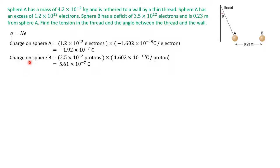Moving on to sphere B: sphere B has a deficit of electrons, meaning it has an excess of protons — more protons than electrons — so it has 3.5 times 10 to the 12 protons. The charge per proton is the same magnitude as the charge per electron, except positive. Multiplying gives us 5.61 times 10 to the negative 7 coulombs.